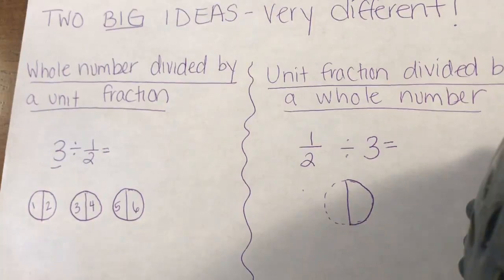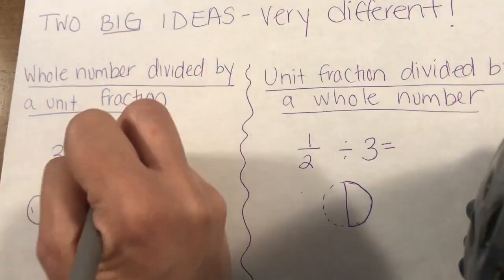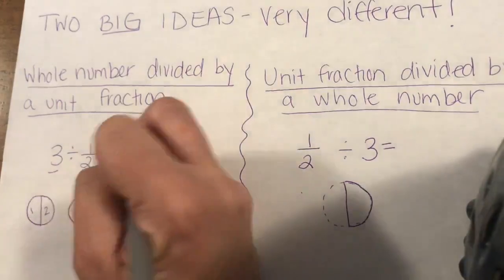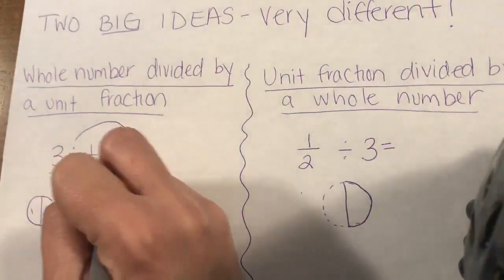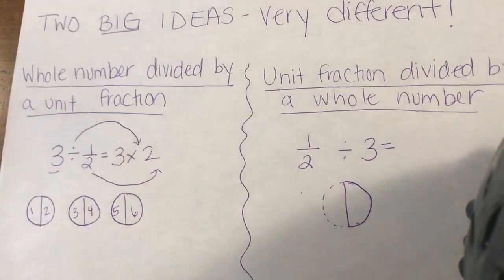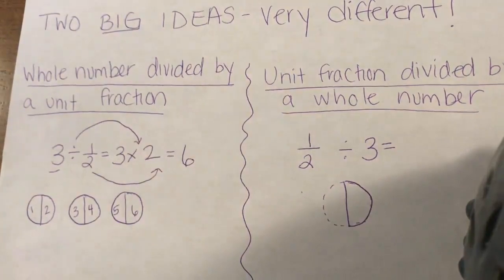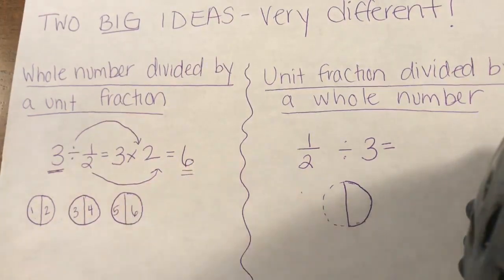The other big idea we talked about last week was taking our division and changing it to multiplication. I have my three wholes, and with each of those wholes I made two pieces. So my division sign turns into a multiplication sign, and the one half becomes two pieces — because when I cut things into halves, I make two separate pieces. That gives me six pieces in all. If I start with a whole number, my answer is a whole number. That's super important to remember.